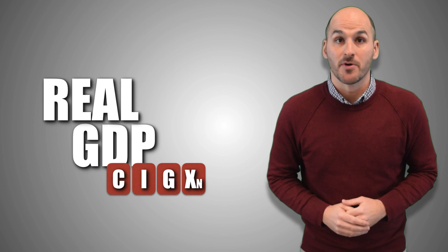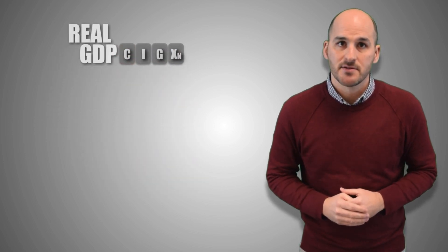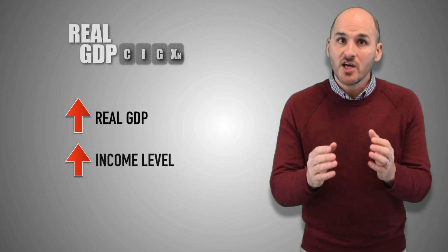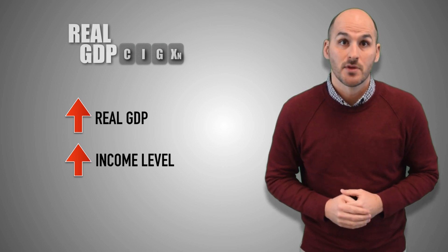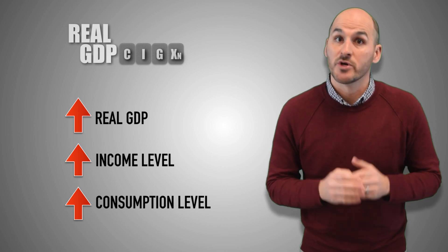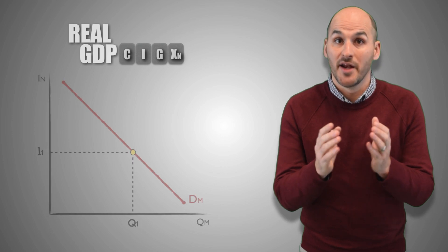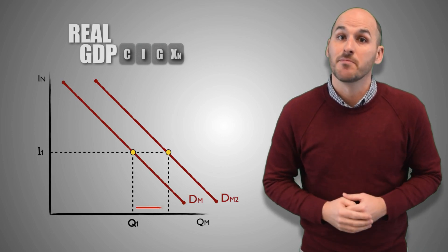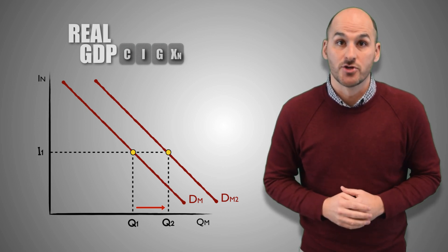A change in real GDP output will change consumption levels across the economy, which fundamentally changes money demand. If the economy experiences economic growth and real GDP output increases, income levels will rise as more workers find employment. With more disposable income to spend, consumers will buy more goods and services, which requires greater quantities of money no matter the nominal interest rate. So an increase in real GDP output leads to an increase in consumption, which causes an increase in money demand.